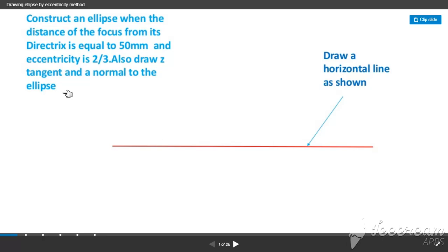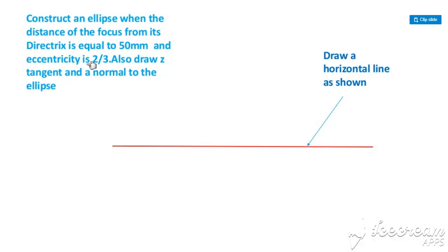Here is one problem. Construct an ellipse when the distance of focus from its directrix is equal to 50mm and eccentricity is 2/3. We don't draw a tangent in this syllabus. What is the eccentricity of the ellipse? It is less than 1. Parabolic is 1 and hyperbolic is greater than 1. Let us see how to solve the problem.